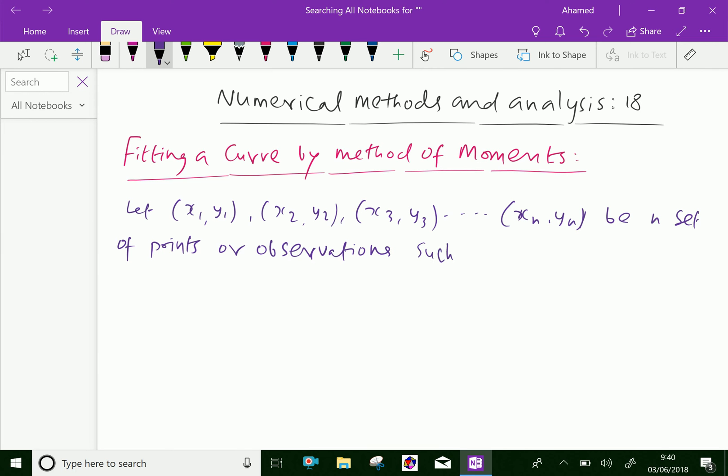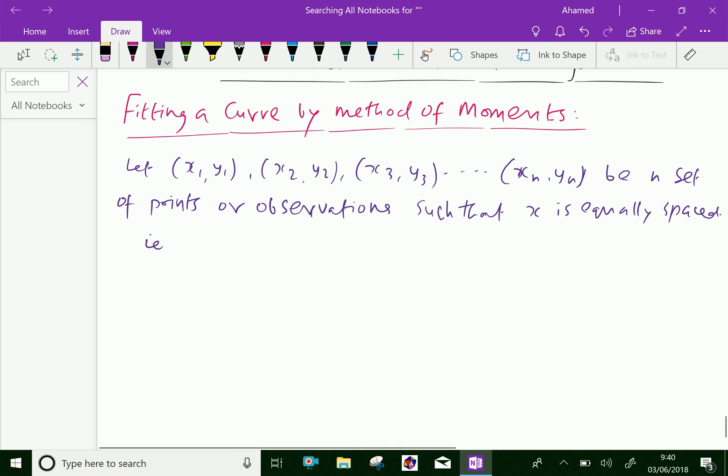such that x is equally spaced. That is, x₂ - x₁ = x₃ - x₂ = x₄ - x₃ = ... = xₙ - xₙ₋₁ = h.